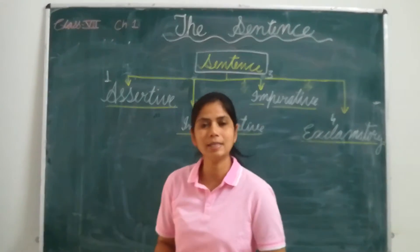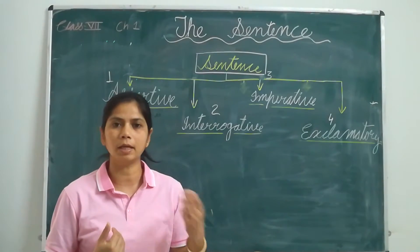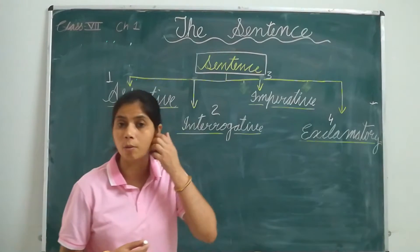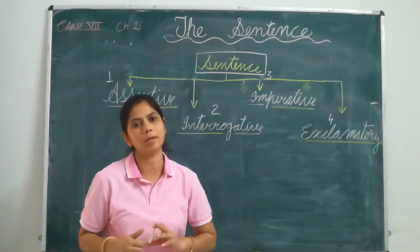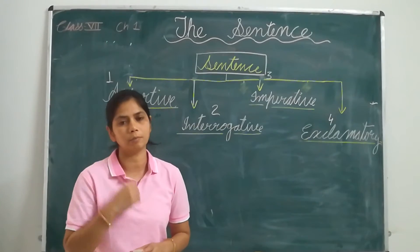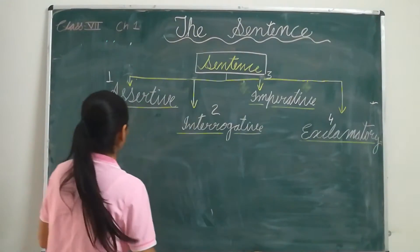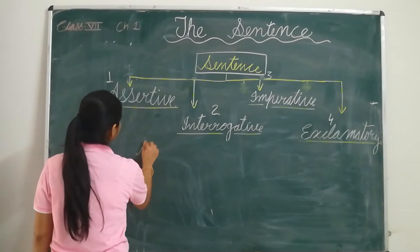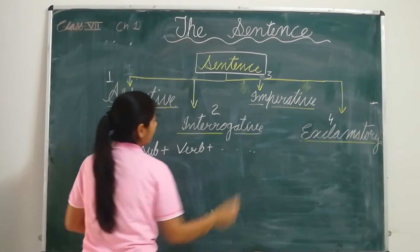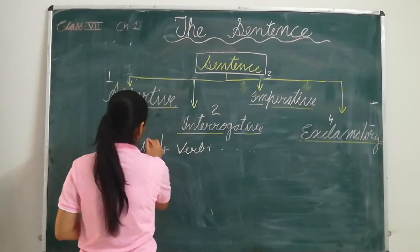The first type is the assertive sentence. As we know, sentences are a group of words that have some meaning and give a complete meaning. The normal structure of an assertive sentence is: there will be a subject, then there will be a verb. As we know, sentences are divided into two parts — the subject part and the predicate part.